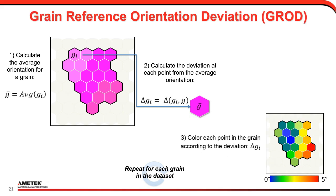There's another grain-based approach where instead of each point getting the same color, we allow some deviation. You calculate an average orientation for the grain, calculate the deviation at each point from the average, but instead of assigning each point the average value, you color each point according to that deviation. In the example schematic, the blue region is very close to the average orientation of the grain, whereas the red is quite far away — almost five degrees — and those can actually be quite large at times in a very strained material.